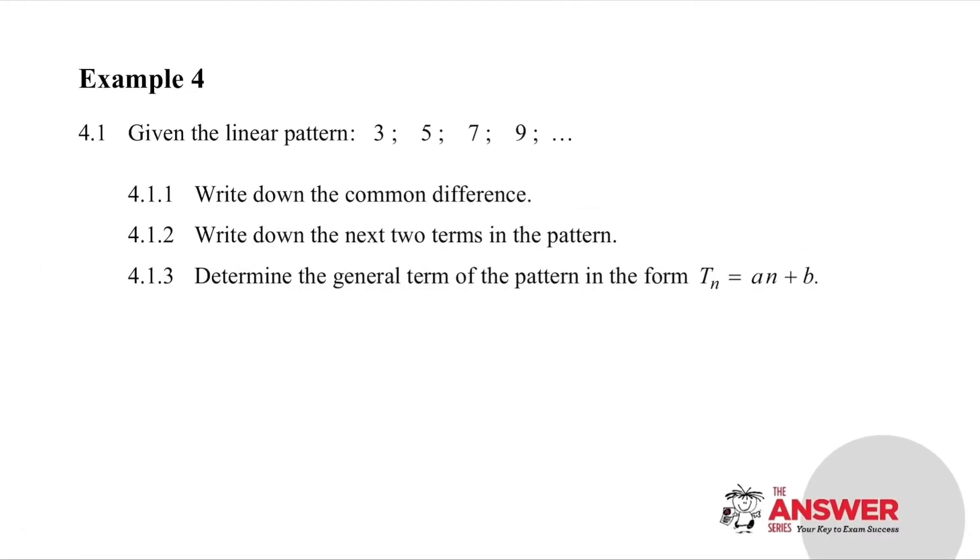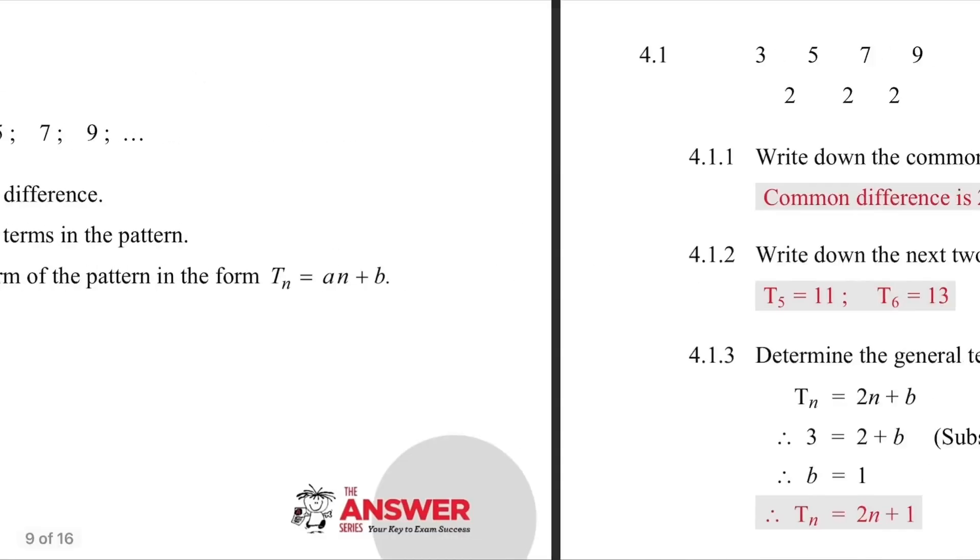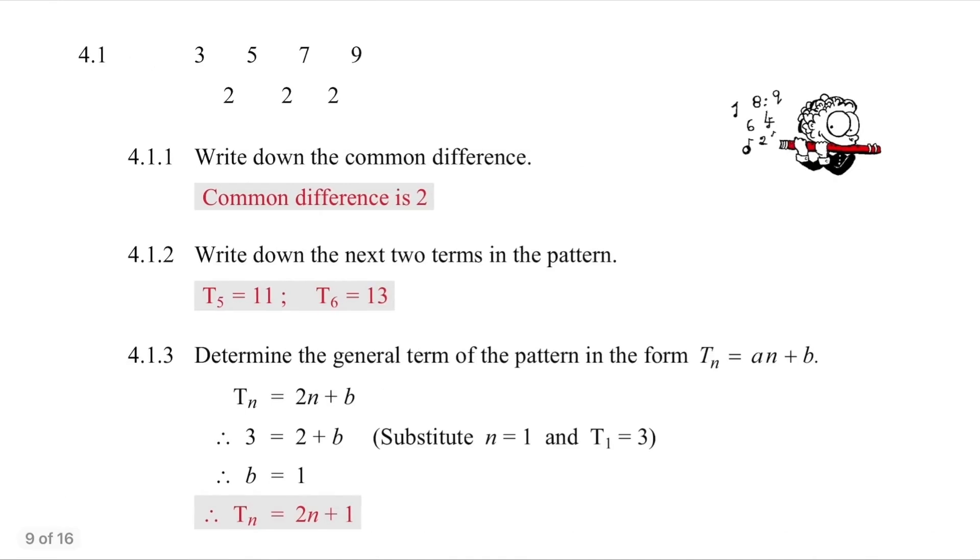This example is setting us up for the question that follows. Try this on your own, and then we'll have a quick look at the solution. Common differences of two. Generating the next two terms of 11 and 13. And then to create the formula, your coefficient is 2. If you substitute 2 in, you need to add 1 in order to give you a first term of 3. Pause the video if you need more time.